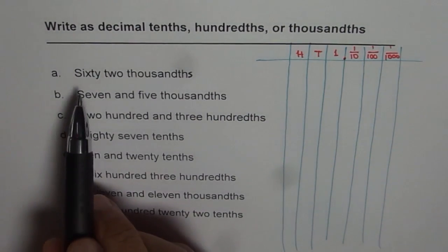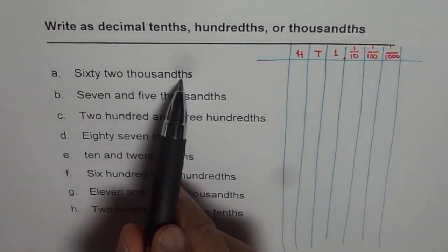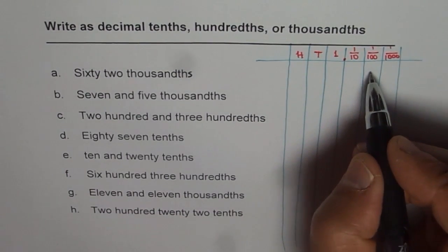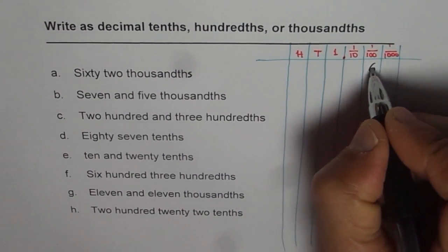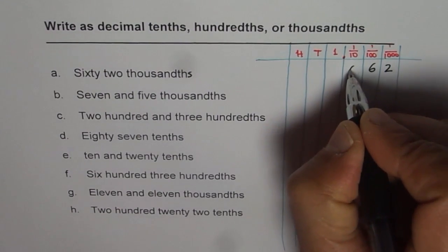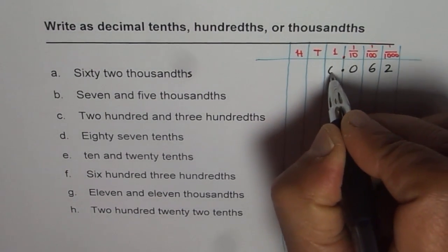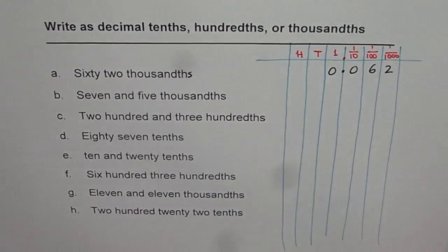The first number is sixty-two thousandths. Sixty-two, the number sixty-two should end here. So we can write this as zero decimal sixty-two. It's always good to write zero before decimal.